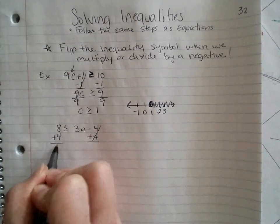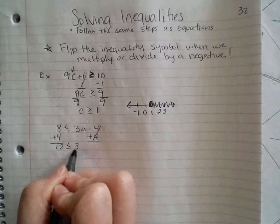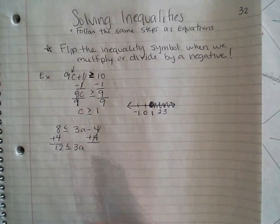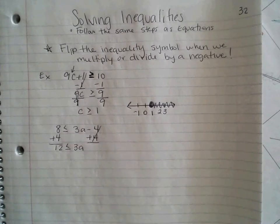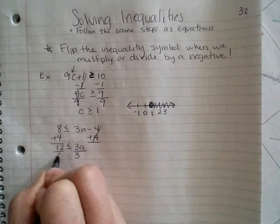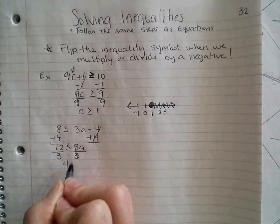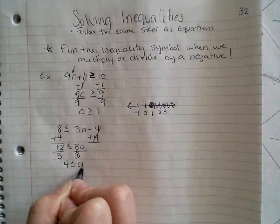8 plus 4 makes 12. Bring everything else down. Less than or equal to and 3a. This is multiplication. Opposite of multiplication is division. So I'm going to divide both sides by 3. 12 divided by 3 makes 4. Bring down my less than or equal to and my a.